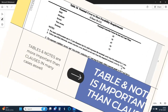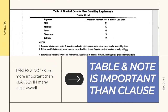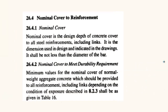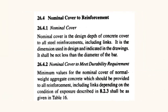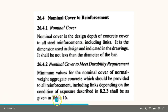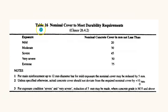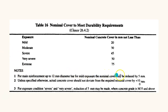Coming to the second tip: sometimes your table and notes are more important than the clause. Let's see one example. If you look at clause 26.4, the code gives nominal cover to reinforcement and cross-refers you to Table 16. In Table 16, if the exposure is mild, the cover to rebars is 20mm — so for slabs your cover is 20mm and for beams it is also 20mm. But if you read the note, it says: for main reinforcement up to 12mm diameter bar for mild exposure, the nominal cover may be reduced by 5mm.